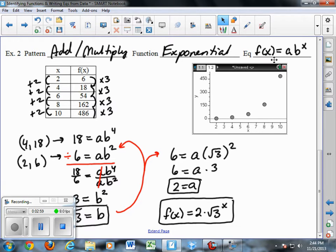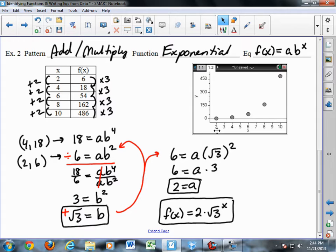An exponential function has the equation f of x equals a times b to the x, where b is the base of the exponent and a is the coefficient. Now, if we look at how to find the particular equation, we need to pick two points from the table because you need a system of two equations to solve for two different parameters, the a and the b.